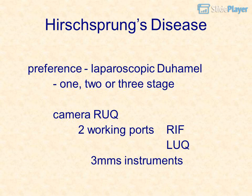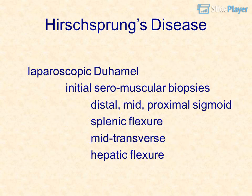Preference: laparoscopic Duhamel, 1, 2, or 3 stage. Camera at RUQ, 2 working ports. Instruments: 3mm. Initial seromuscular biopsies taken distally, mid, proximal sigmoid, splenic flexure, mid transverse, and hepatic flexure.